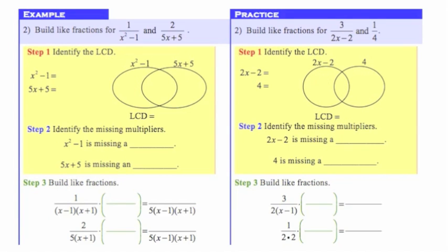Now let's use that same technique, but let's take a look at some rational expressions that have polynomials in them. We're going to use the same process. Here in my example, I have a denominator of x squared minus 1 and another denominator of 5x plus 5. I need to find the common denominator for these two fractions, which is a little tricky, but the Venn diagram will break it down and make it pretty manageable. The first thing we do is factor.